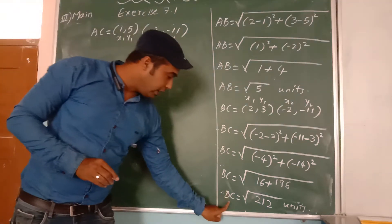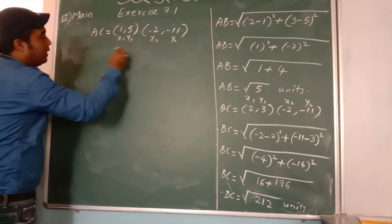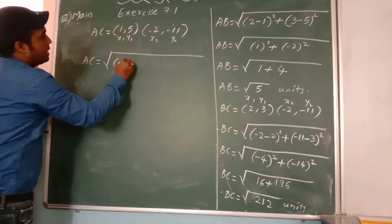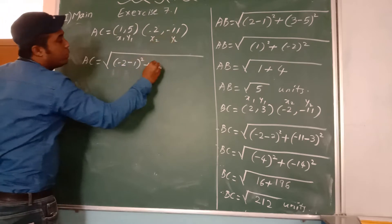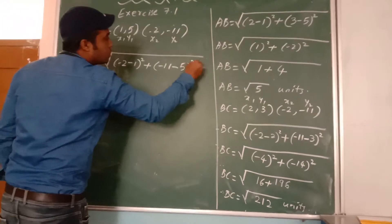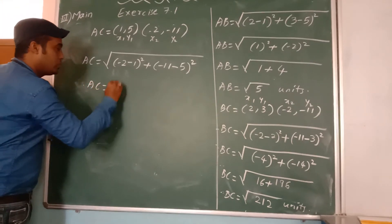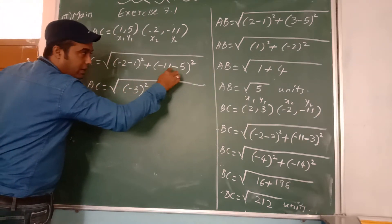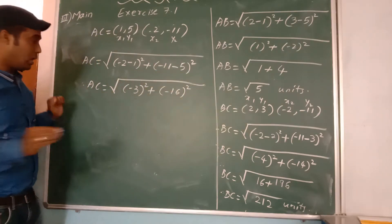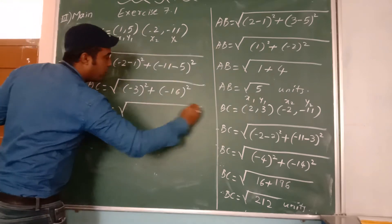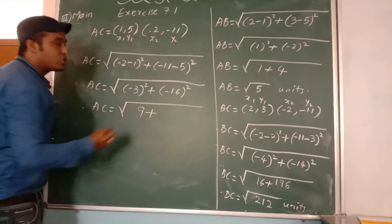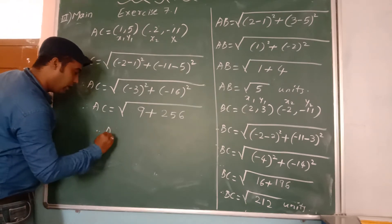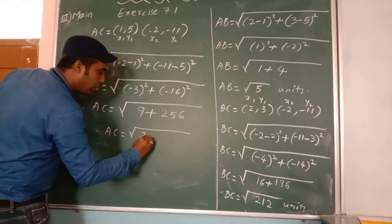Let us find out AC. We have the value of VC, now after that AC we have to find out again by applying the first formula. AC is equal to square root of x2 minus x1 whole square plus y2 minus y1 whole square. That is minus 2 minus 1 whole square plus minus 1 minus 5 whole square, which gives us minus 3 square plus minus 16 square, that is 9 plus 256. Therefore AC is equal to square root of 265 units.